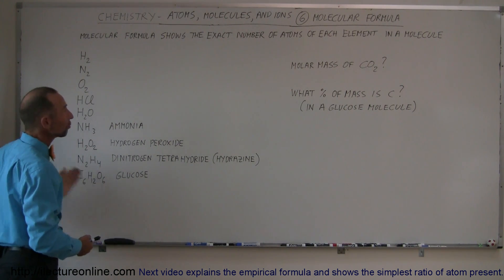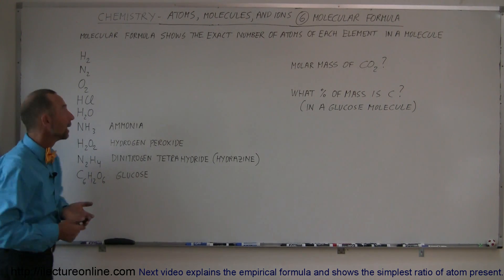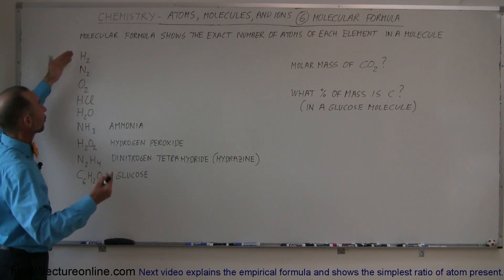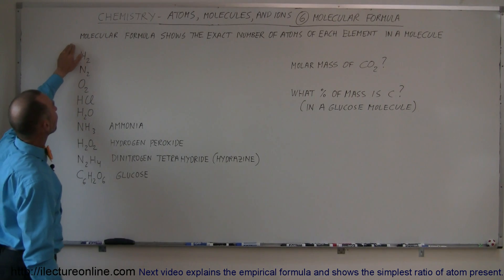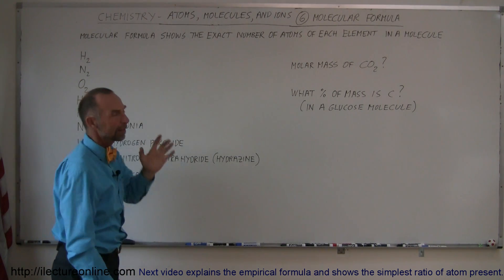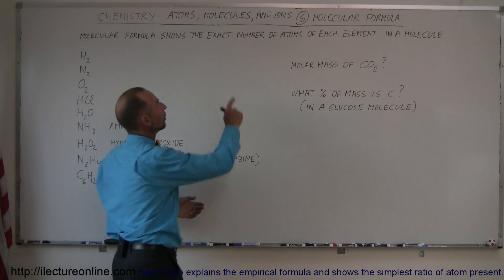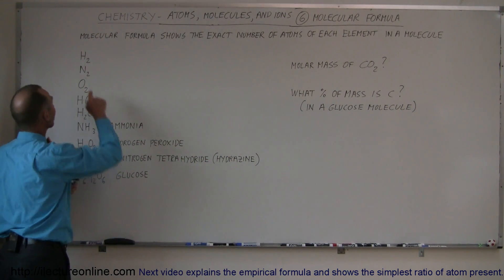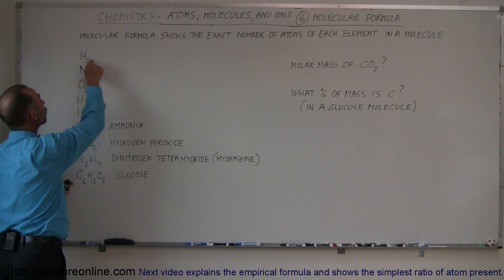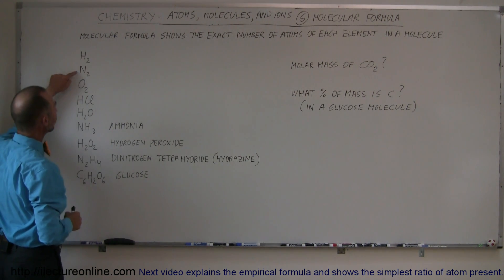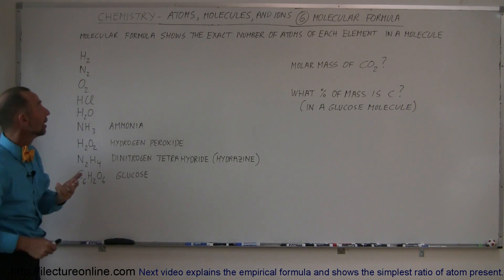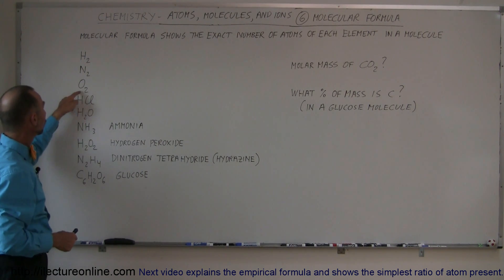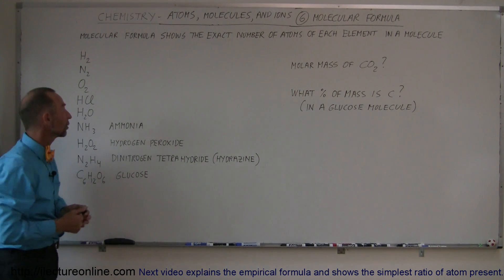And so these are representations of what we call molecular formulas. Let's first see what the definition is. The molecular formula shows the exact number of atoms of each element in a molecule. So in this case, we have H2, which means there's two hydrogen atoms in this molecule. Here's N2, that means there's two nitrogen atoms in the molecule. O2, two oxygen atoms in the molecule.